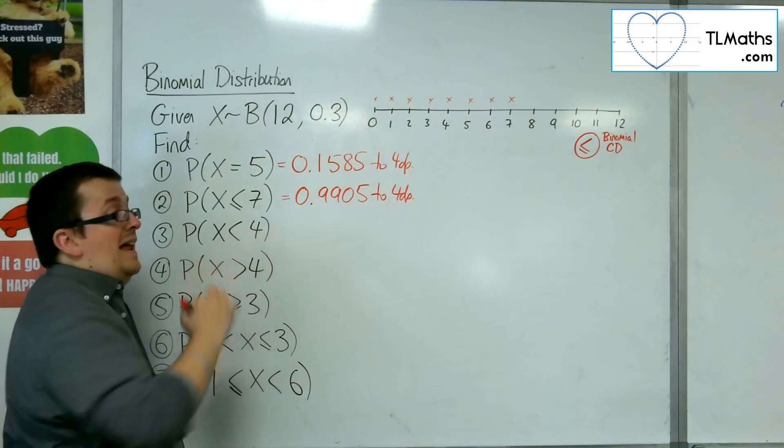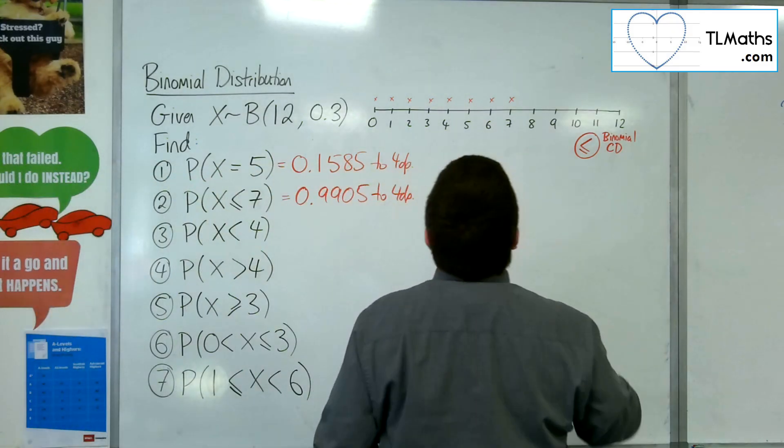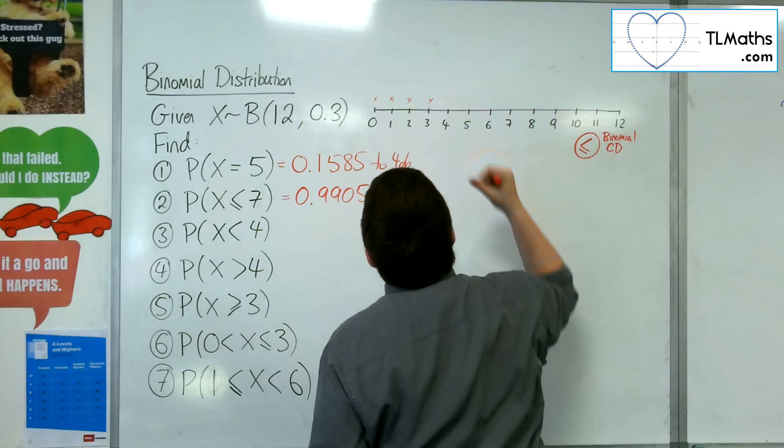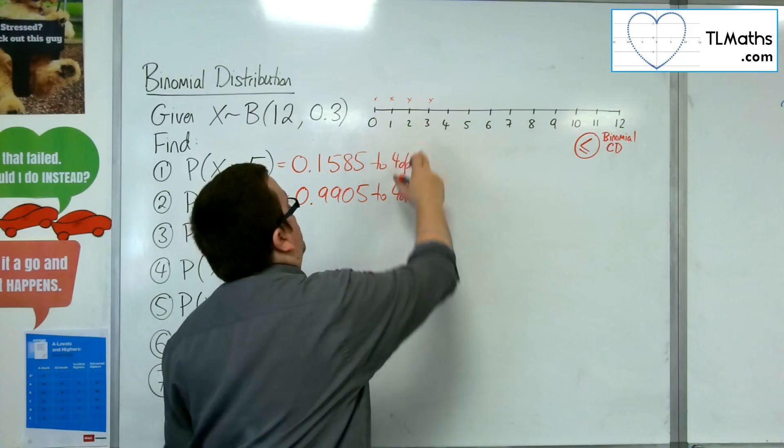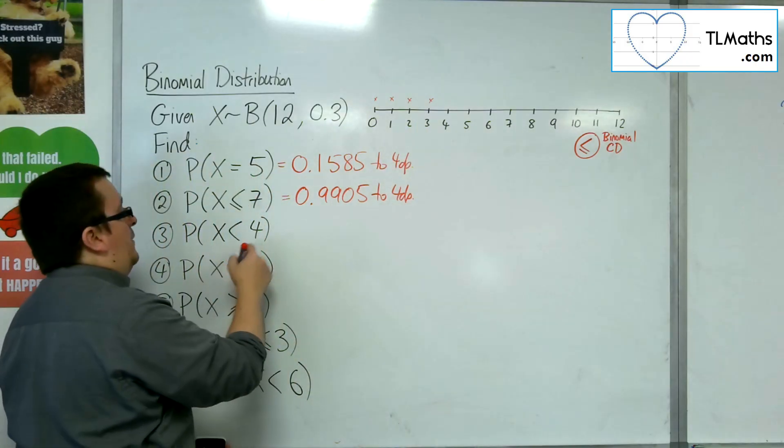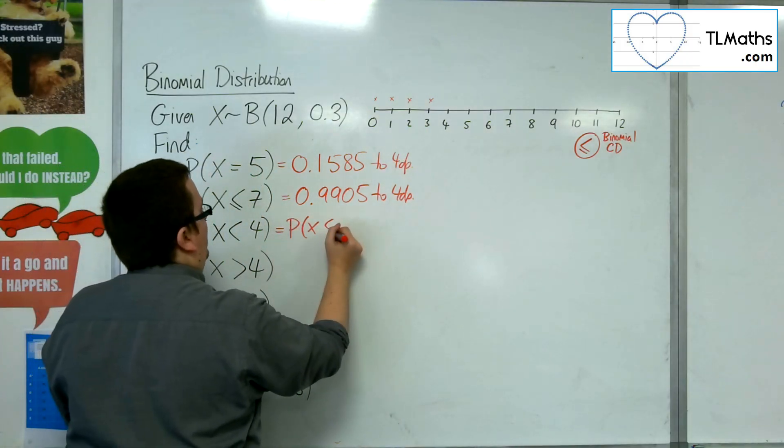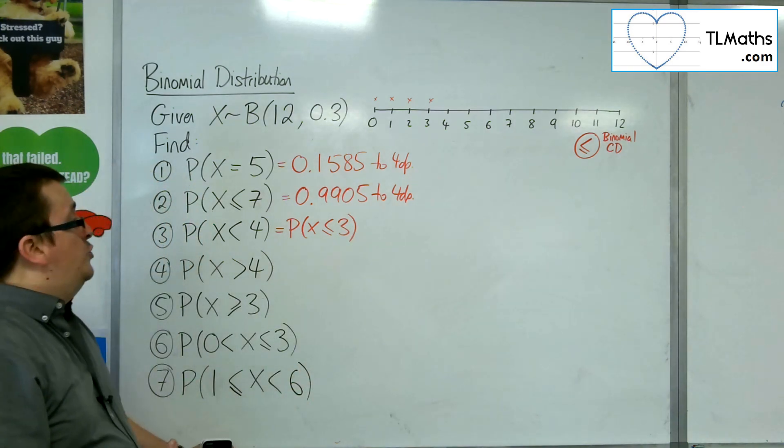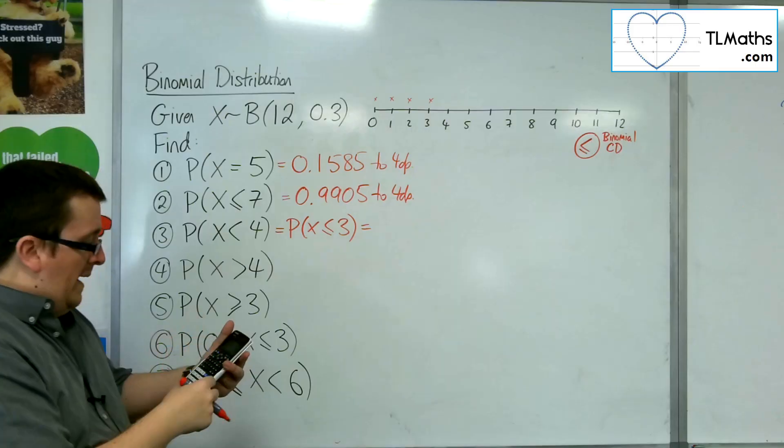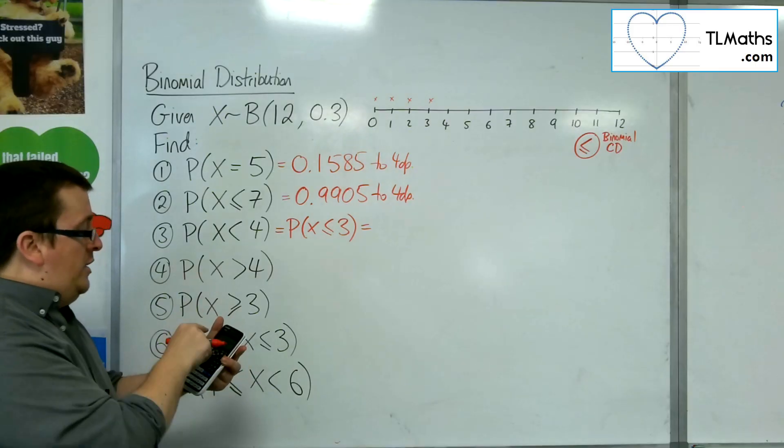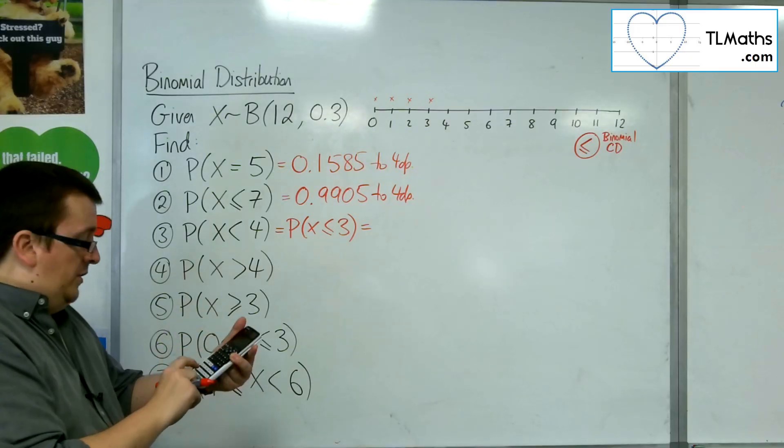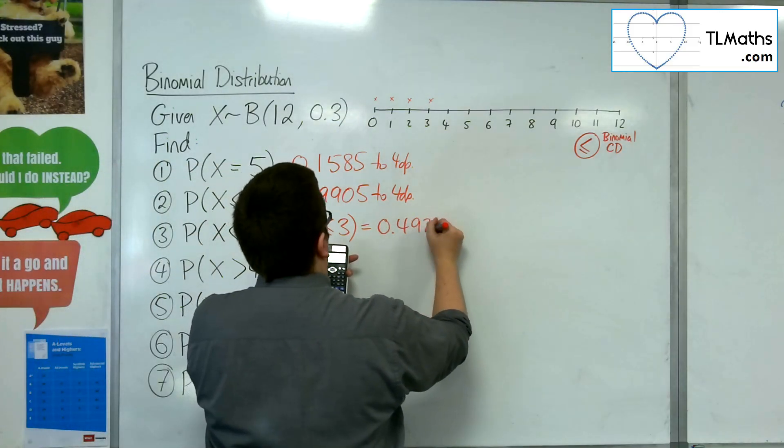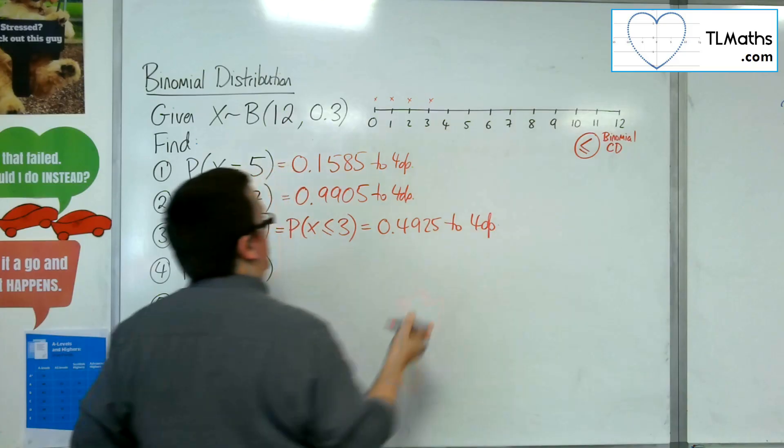Right, less than 4. So on our number line, less than 4 would be those. 0, 1, 2 and 3. So actually, less than 4 is the same as less than or equal to 3 for a discrete probability distribution. So now we can go back in and change the x value in the binomial CD to 3. And we get 0.4925. So that's the probability we were looking for.